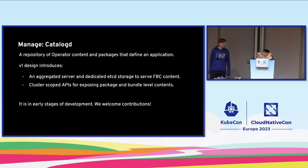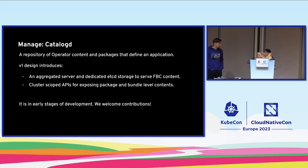The next component is Catalog D. This is still in a very early stage of development, so we're really looking for input. Catalog D is essentially a repository — a library — containing the operator content that defines the packages and bundles required by the operator. The v1 design currently includes an aggregated server and persistent storage using etcd to serve the FBC content. It will expose two kinds of APIs: package-level APIs that expose package-level data, and bundle-level content.